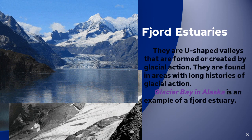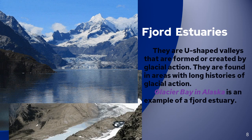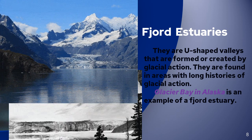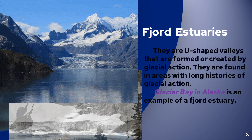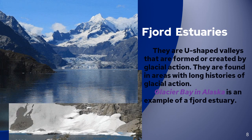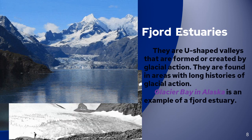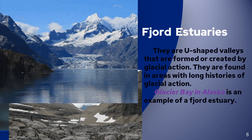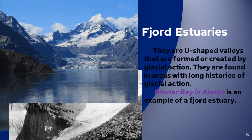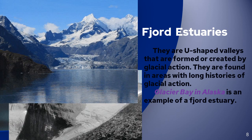Glacier Bay in Alaska is an example of a fjord estuary — a U-shaped valley that is formed or created by glacial action.